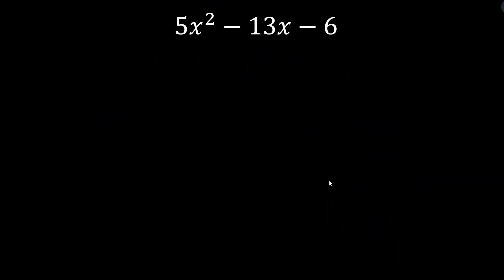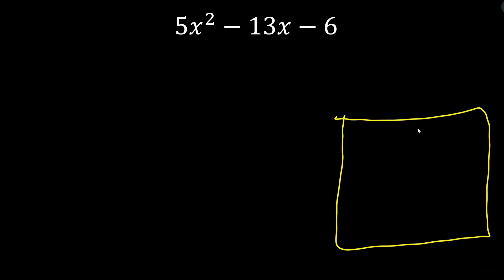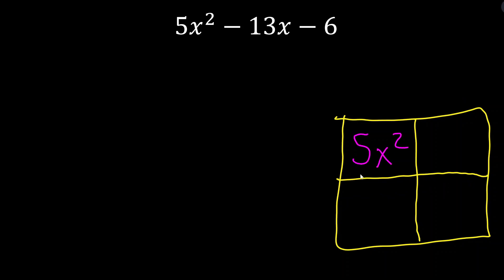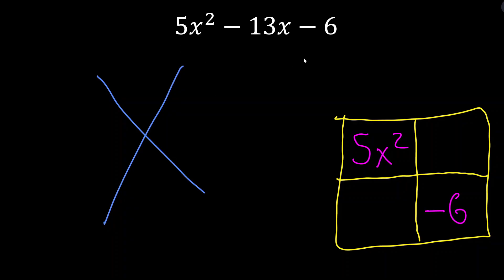Let's try our next example. First thing: is there a GCF? No — 13 and 5 don't share anything in common, and there's no x in all three terms. So we draw our box and say we're looking for two factors that multiply together to equal 5x² − 13x − 6. The two x terms multiply to 5x², the two constants multiply to negative 6. We write our X: a times c is 5 times negative 6, which is negative 30. We write negative 30 at the top and b = negative 13 at the bottom.